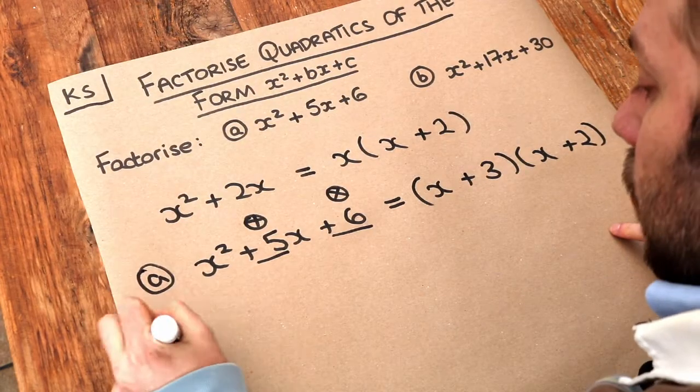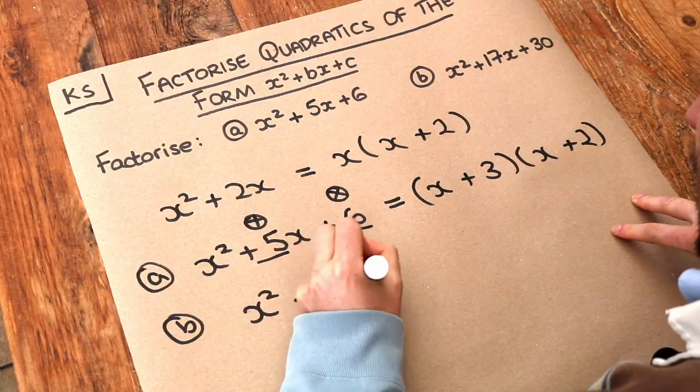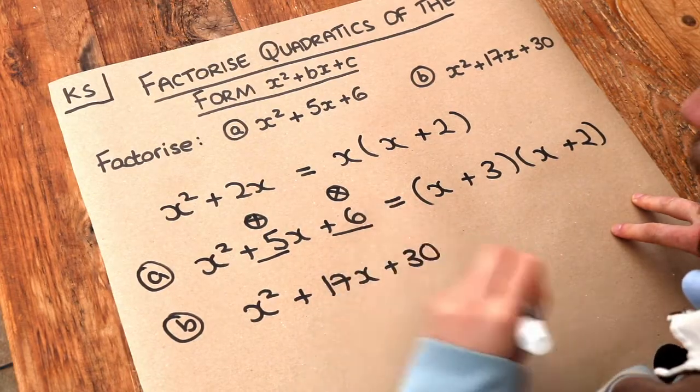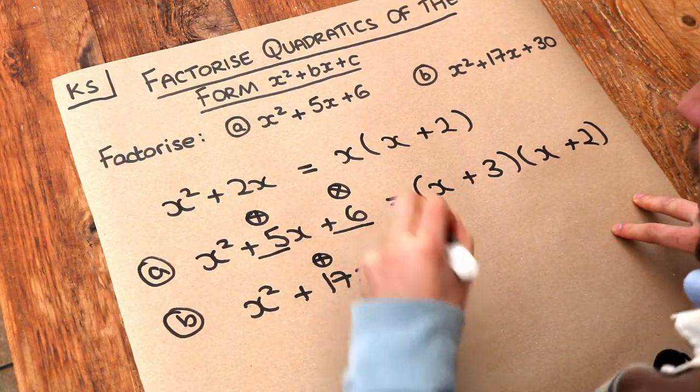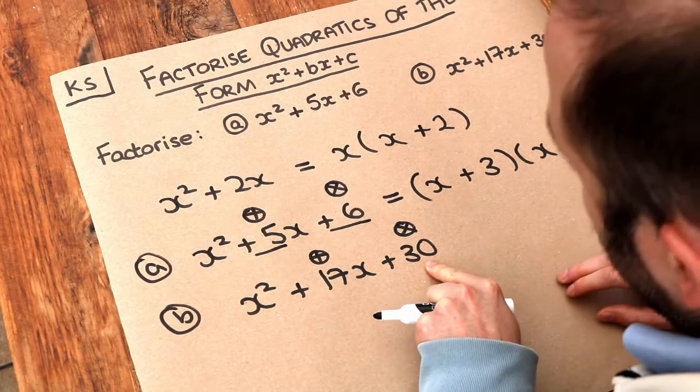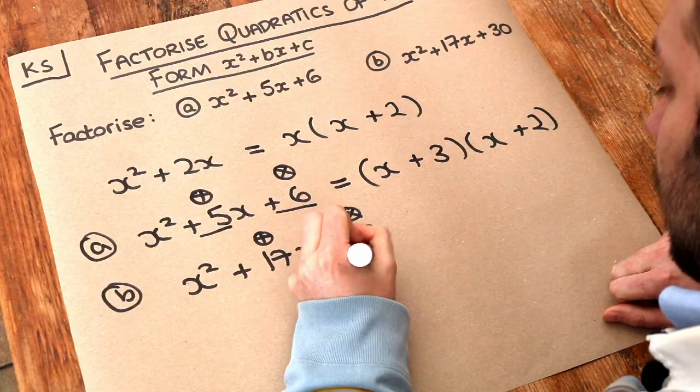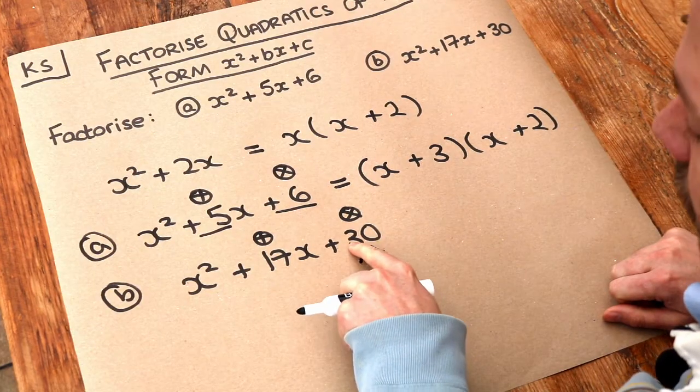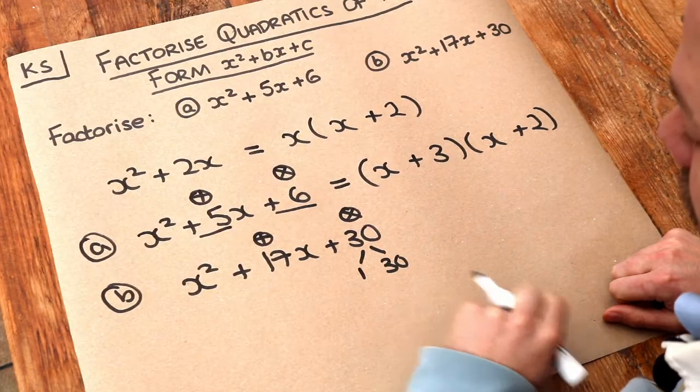Let's use that strategy for the second one. So we've got x squared plus 17x plus 30. Again, we need to find two numbers which add to give the 17 and multiply to give the 30. Now there's a few more possibilities now in terms of numbers that multiply to give 30. And you might find it helpful to write out the factor pairs. So what numbers multiply to give 30? Well 1 and 30 multiply to give 30 but they don't add to give 17.